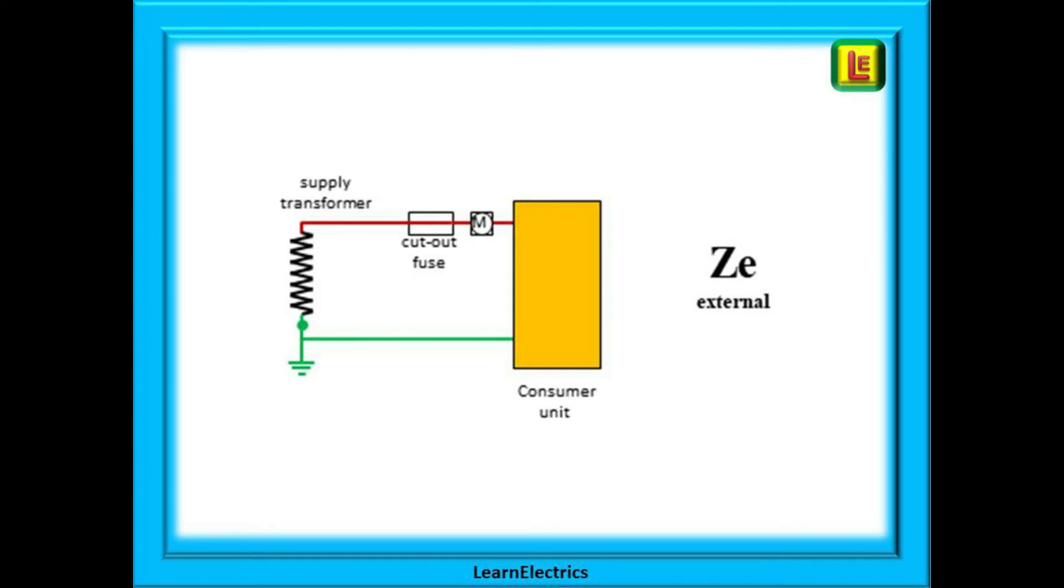Here we are showing ZE, or the external part of the electrical circuit from the consumer unit out of the building along to the supply transformer and back. Try to remember ZE with an E for external impedance. The impedance ZE is often measured at the entry point to the consumer unit and it measures the supply's equipment and cables. As we are measuring a live AC voltage outside the property, this is an impedance.